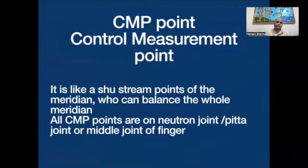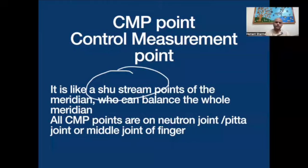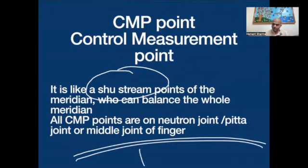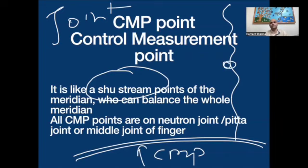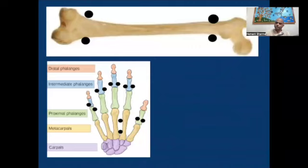So this is the CMP point. In the previous class we discussed a little bit about the CMP point — that the CMP point is comparable to the source stream point, like the source stream point balances the whole meridian. In the same way, the CMP point has the power to balance a complete meridian. All the CMP points are found on the middle joint.